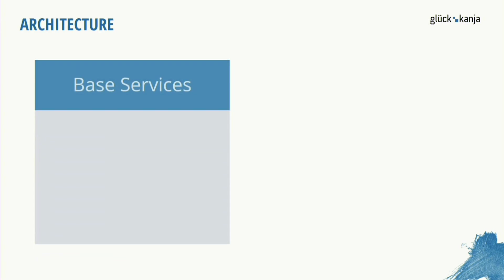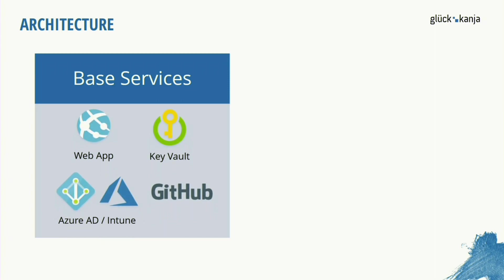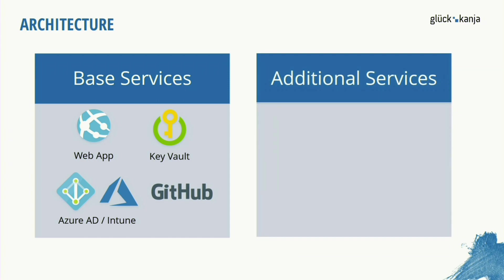The architecture is very simple. The base services are Microsoft Web Apps, Azure Key Vault, Azure Active Directory, and Intune. We also use the Glueckkanja GitHub repository, but only to serve artifacts to the web app — the web app loads the artifacts and then we do not interact with GitHub anymore. To extend the services we can use the Traffic Manager for higher availability, or Azure Storage to load artifacts instead of GitHub.